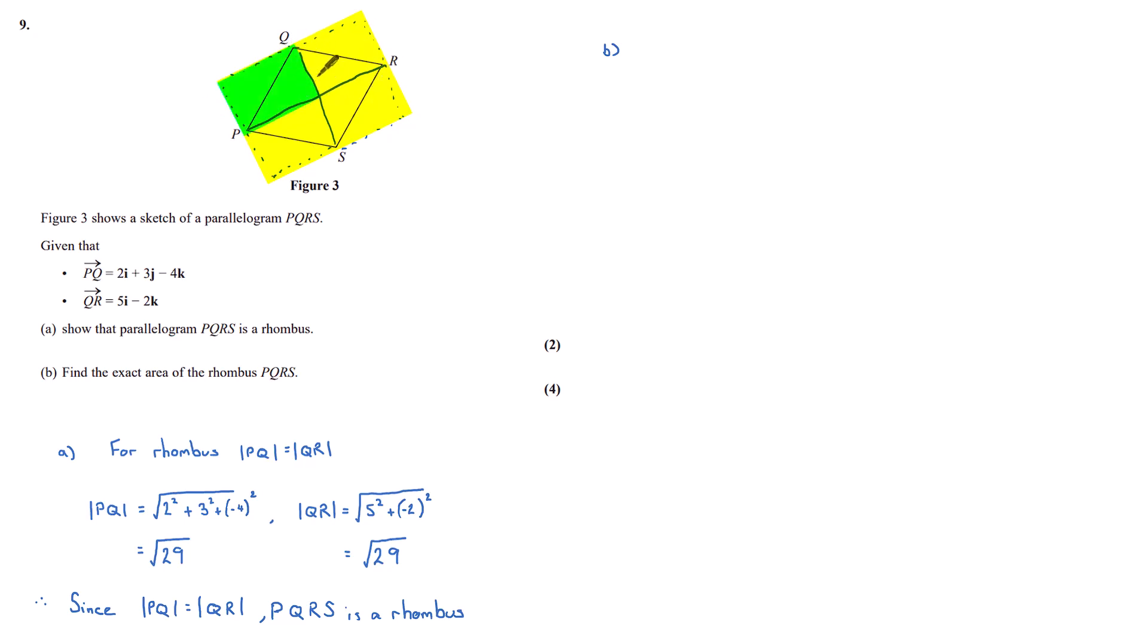So we can find PR. We have PQ and we have QR, and if we add them together we get PR. That's in column notation: 2, 3, minus 4 plus 5, 0, minus 2, which gives us 7, 3, minus 6.